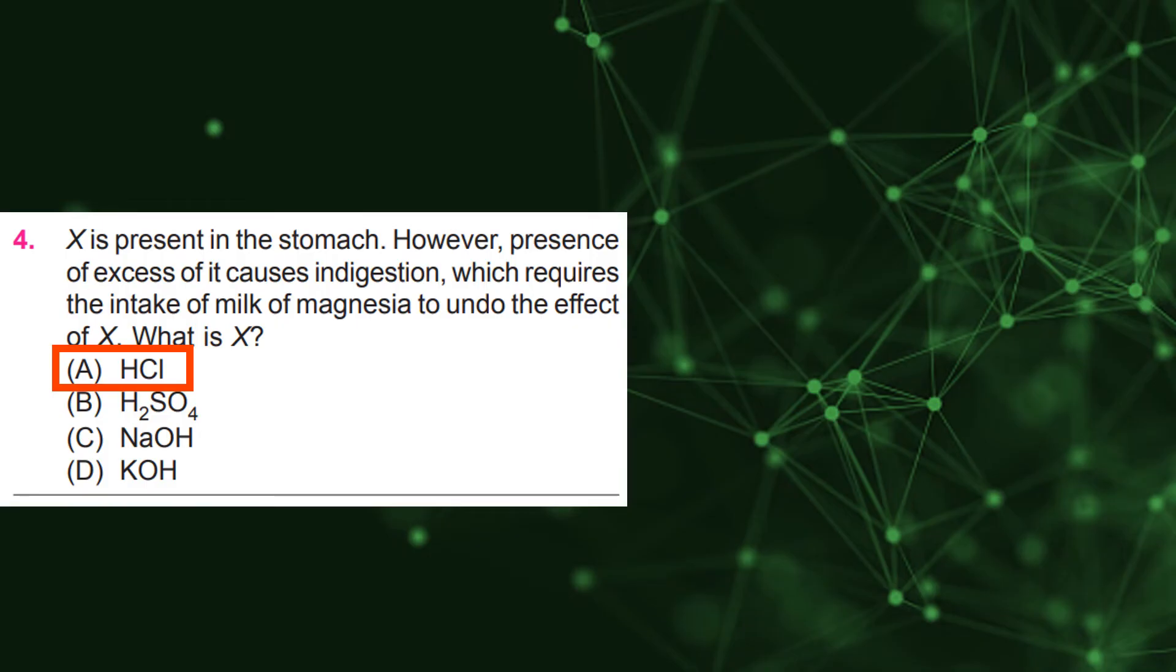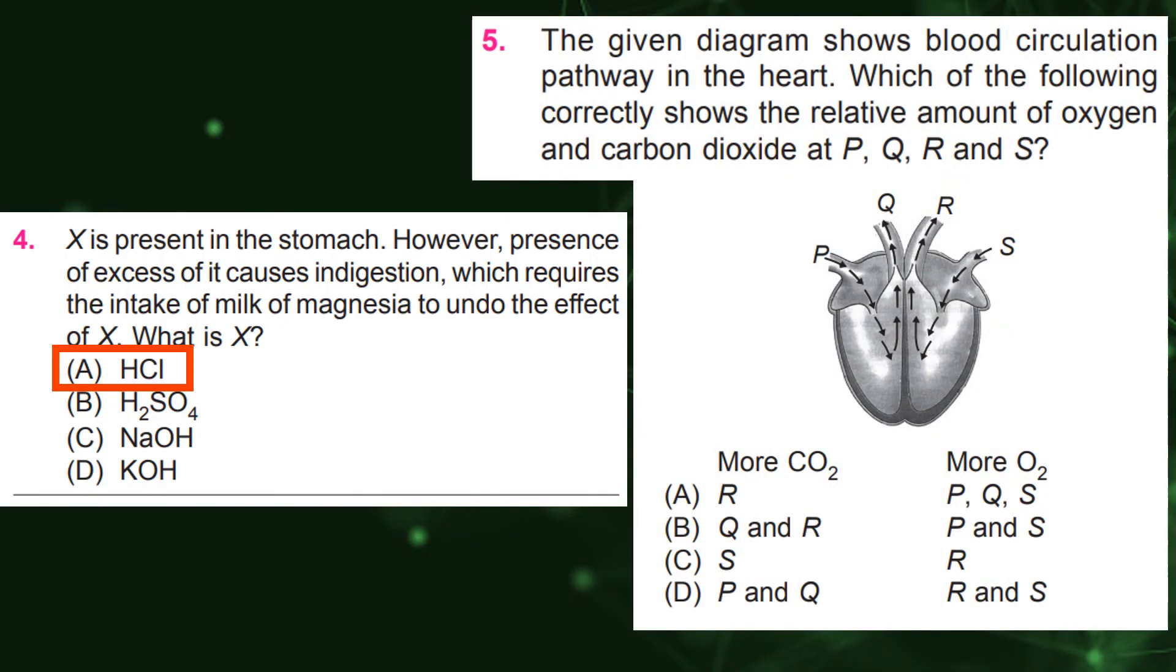The given diagram shows blood circulation pathway in the heart. Which of the following correctly shows the relative amount of oxygen and carbon dioxide at P, Q, R, and S? D, P and Q, R and S.